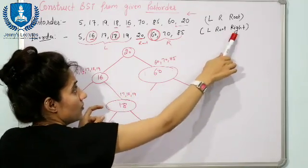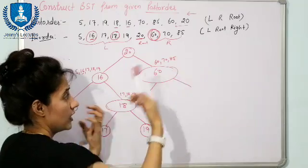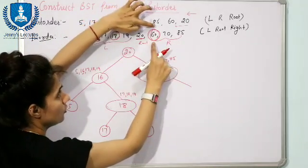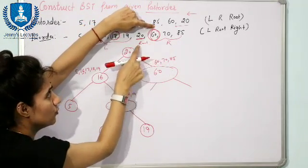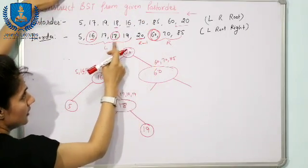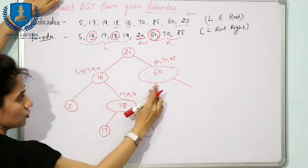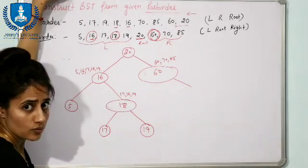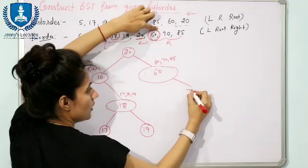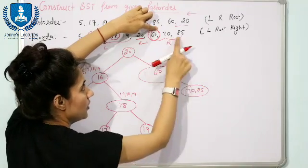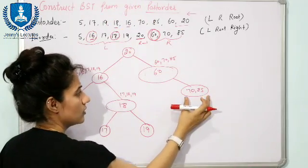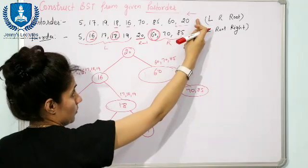Root is in between the left and right subtree. Out of {60, 70, 85}, 60 is the root. To the left of 60 in the inorder traversal, no element from this set exists — so the left child of 60 is null. Both 70 and 85 are to the right of 60, so they form the right subtree.